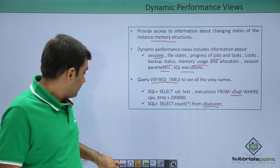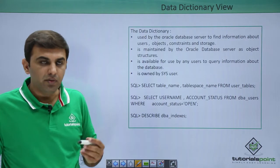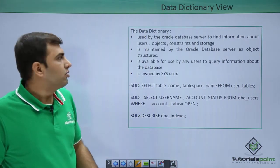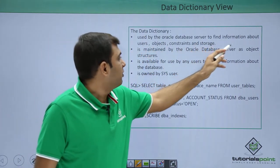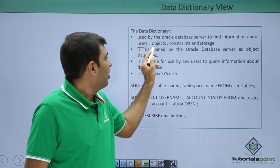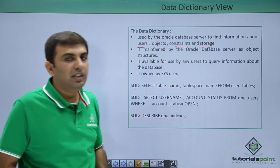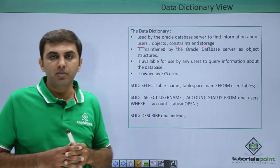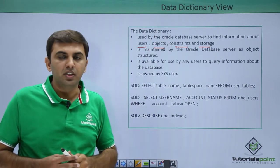Next is the data dictionary view. What is the data dictionary? It is used by the Oracle database server to find information about users, objects, constraints, and storage. If you want to see how many users are in the Oracle database, or how many data files exist, that information you can get from the data dictionary.